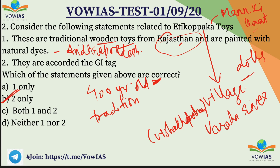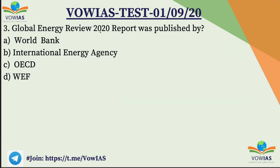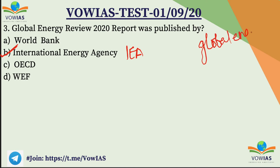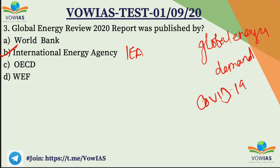Question number 3: The Global Energy Review 2020 report was published by — A) World Bank, B) International Energy Agency (IEA), C) OECD, or D) World Economic Forum. The GER 2020 report was published by B — the International Energy Agency. This edition focused on how COVID-19 affected global energy demand and emissions of carbon dioxide.